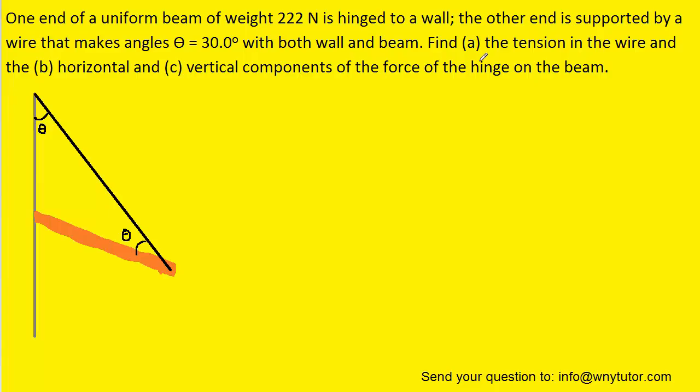In order to solve for the tension in Part A, we're going to apply the sum of the torques and set that sum equal to zero since the beam is in equilibrium. When summing the torques, we have to select a pivot, and what we can do for Part A is select the hinge as the pivot point.